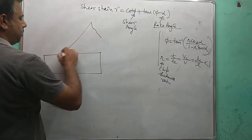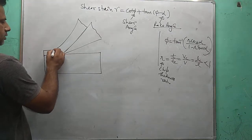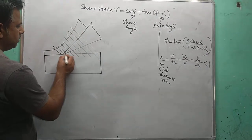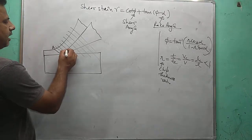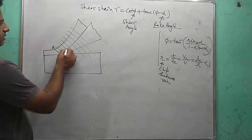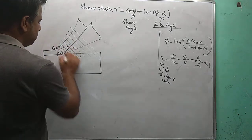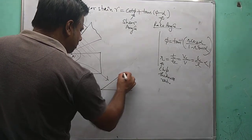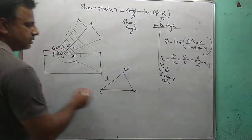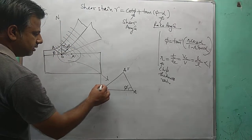Suppose this is the workpiece and this is the single point cutting tool. A thin layer deforms along the shear plane O-A. All layers deform like this along the shear plane. Suppose this is O, this is A, this is A-dash, and this is A-double-dash. A-dash deforms along the shear plane up to A-dash. This is the shear angle, and this is the normal.